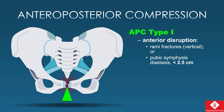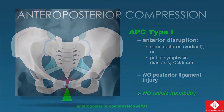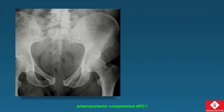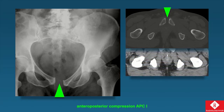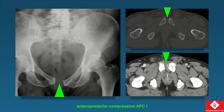With APC type 1, we can have symphysis disruption or, if it's a broader force slightly off midline, we'll see rami fractures — typically in a vertical orientation — instead of symphysial disruption. There is no posterior ligament injury, no pelvic instability. On radiograph we see widening of the pubic symphysis, and here it is on CT. Remember, when imaging these patients, they may already be placed in a pelvic binder or have a sheet around them, so some injuries can be reduced at the time of imaging. Notice this patient is bleeding anteriorly between the symphysis on the soft tissue window.